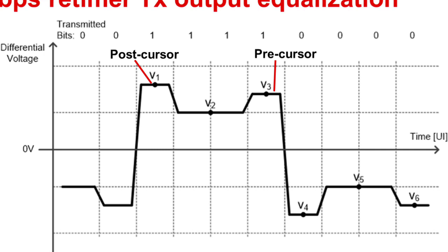The bit preceding the edge transitions, such as voltage points V2 and V3, is known as the precursor. Precursor de-emphasis may also be applied to equalize the transmitted signal.